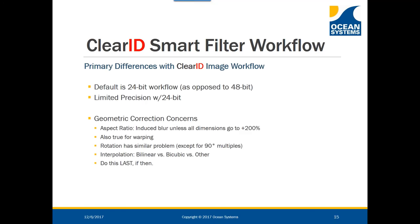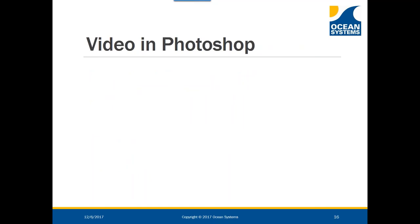The Clear ID smart filters differ from image processing in a few ways. First, it's limited precision — we're not going from 8-bit to 16-bit mode with video, so we don't get the additional precision that 16-bit mode provides. The other thing to understand about working with video in Photoshop is geometric correction concerns: any resizing of video can induce blur unless all dimensions go to 200 percent; rotating not in 90-degree multiples can also cause issues. If you need aspect ratio correction, we typically recommend doing it last.